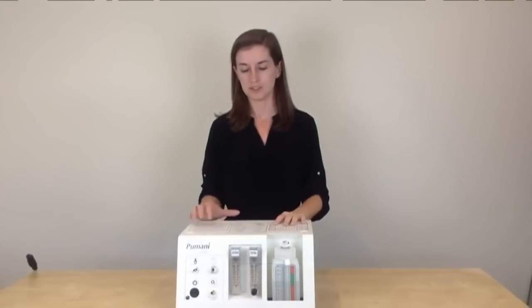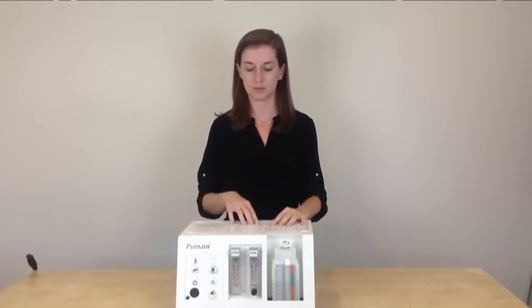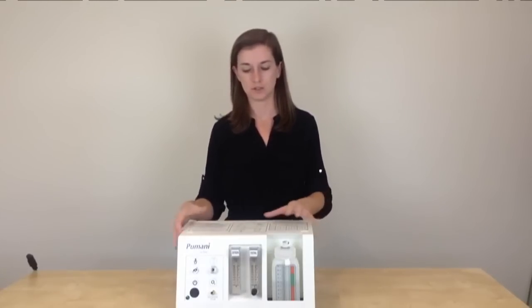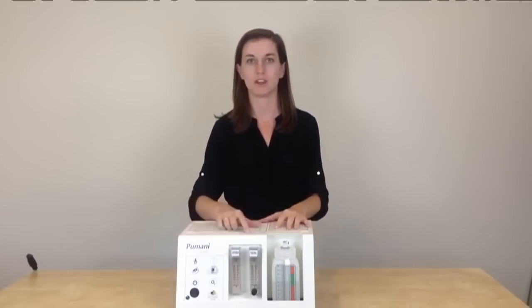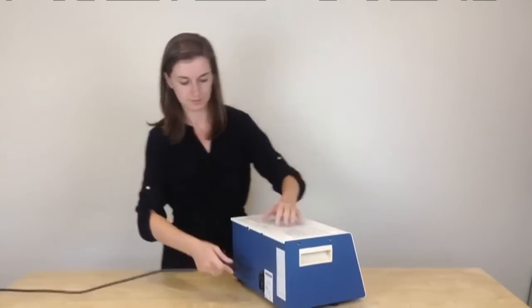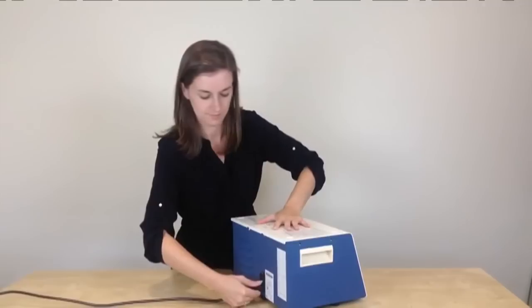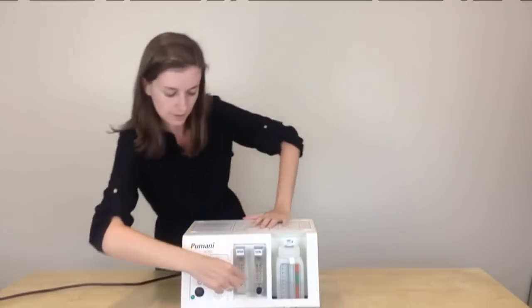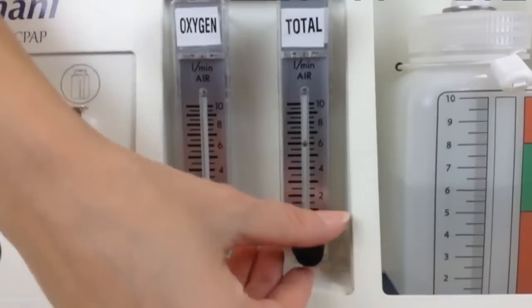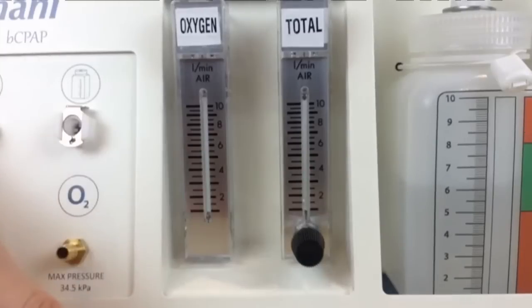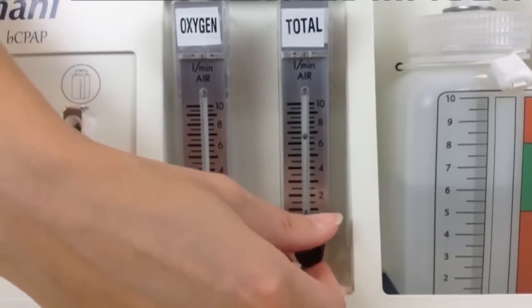Now that you have replaced the filter under the pump, you've reattached the pump and you closed the unit and tightened the screws around the unit. You will need to turn on the unit and make sure that the total flow goes up to 10 liters per minute. So you'll need to plug in the unit in the back. Turn on the unit. And look at the total flow meter. Adjust it until it increases up to 10 liters per minute. And then set it back to the flow that you would like to provide to the patient.